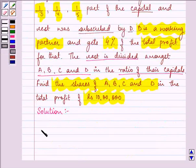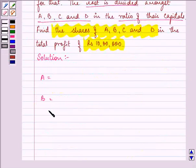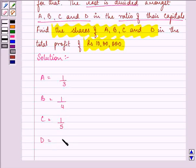Now here let us start the solution. We are given that the capital subscribed by A, B and C respectively are 1 by 3, 1 by 4 and 1 by 5. And the remaining is contributed by D.